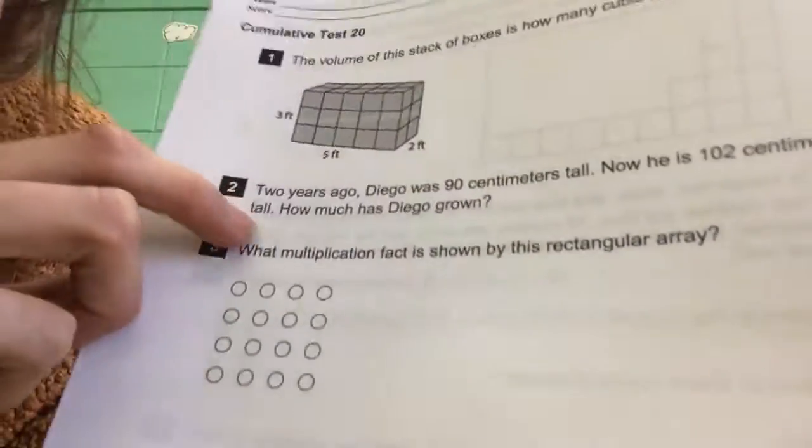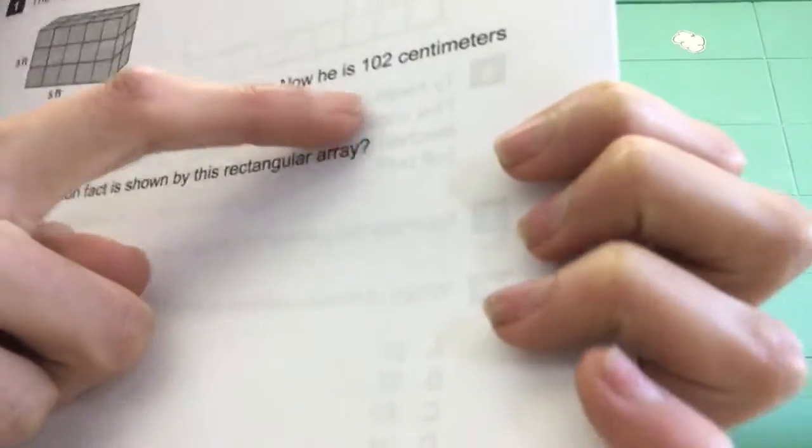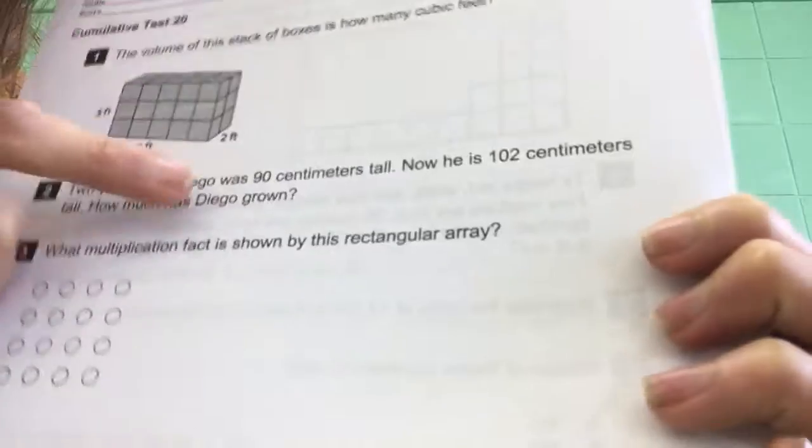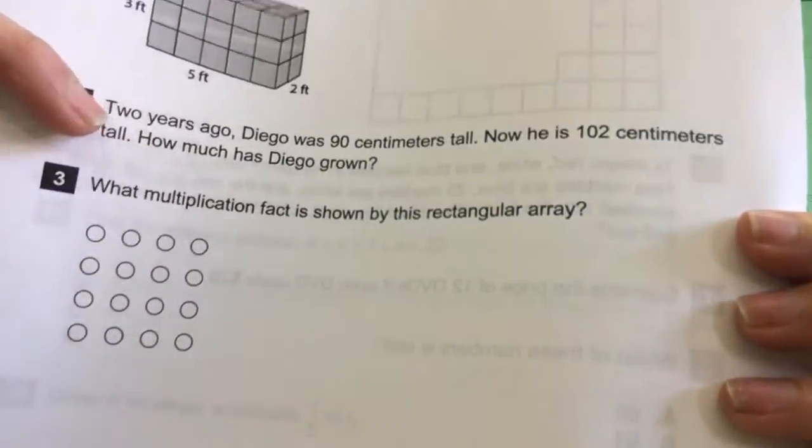Okay, number two. Number two says two years ago Diego was 90 centimeters tall. Now he is 102 centimeters tall. How much has Diego grown? Okay, so you know what to do there.